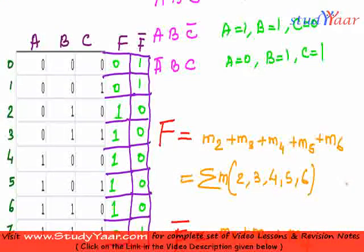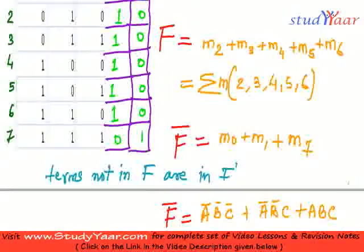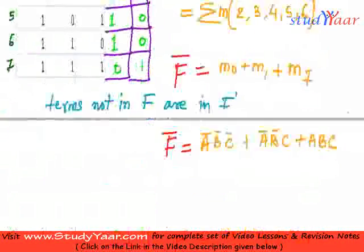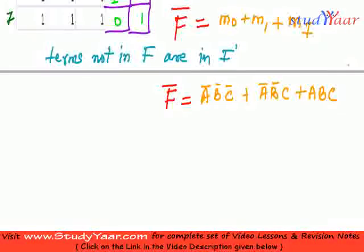From the truth table of F I am also able to derive what is the sum of min terms for F bar and what is the canonical SOP for F bar. So with this I conclude the topic of min terms. Now I am going to tell you about max terms.